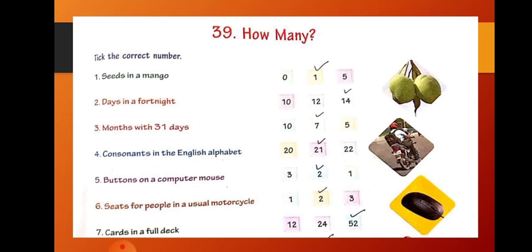Now, fifth one. Buttons on a computer mouse. So, there are two buttons on a computer mouse. That is, left button and right button. And the options are 3, 2, 1. So, the correct option is 2. Left button and right button. Two buttons are there. Take the correct one, 2.